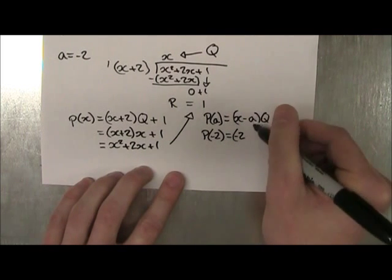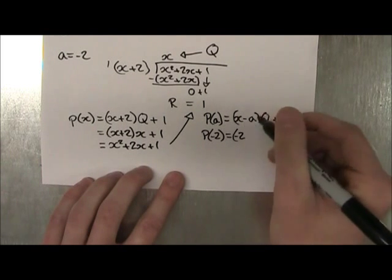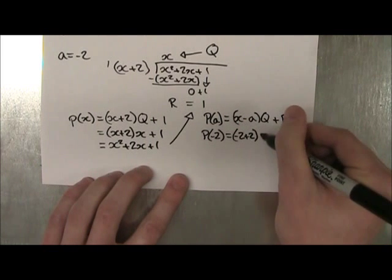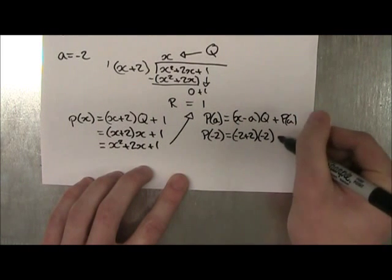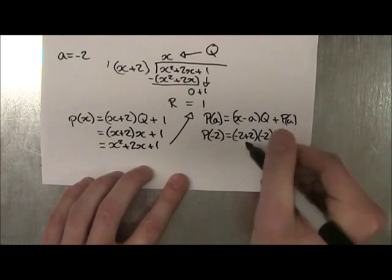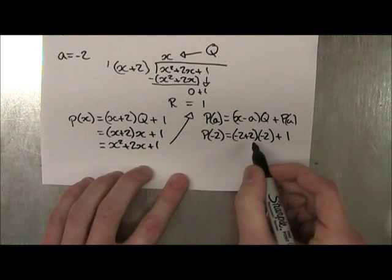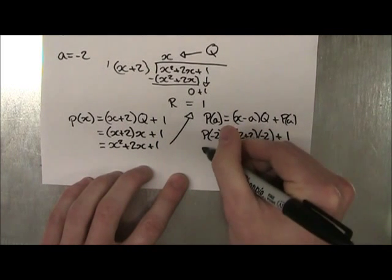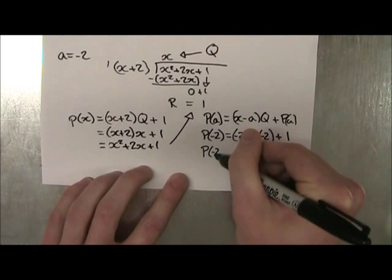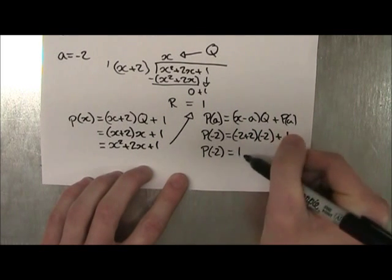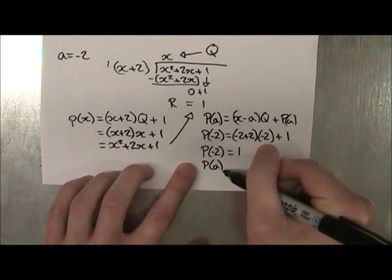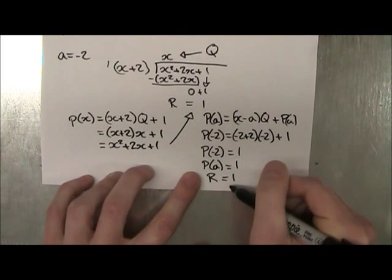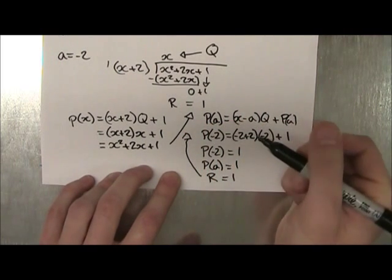And remember a is our minus 2, but it's minus minus 2. So it's plus 2. Our q is x, but we replace x with minus 2. So minus 2 plus our remainder. So as you can see, minus 2 plus 2 is equal to 0. And 0 times anything is 0. So we get plus 1. And remember this p(-2) is equal to 1. But the p(-2) is actually p(a), which is actually the remainder. So our remainder it states is equal to 1. And that agrees with what we found. So this is true.